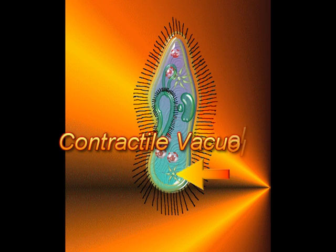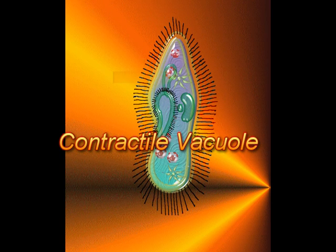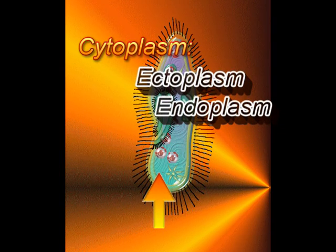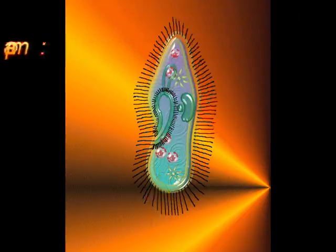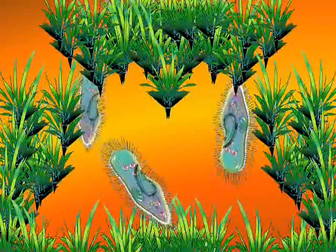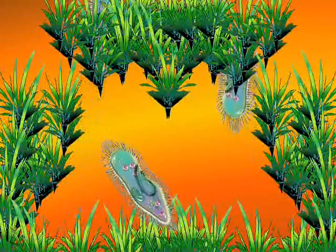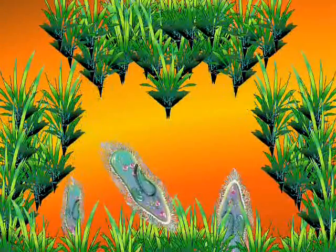Contractile vacuoles contract to push unneeded water away from the cell. The cytoplasm consists of the ectoplasm, which is the cell's outer layer gel, and the endoplasm, which is the cell's inner fluid. Waste is expressed through an anal pore, not shown in the diagram.